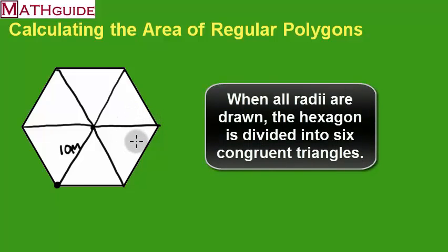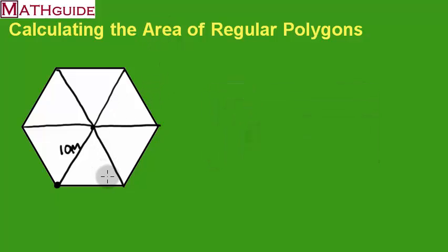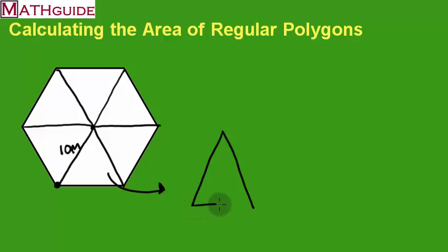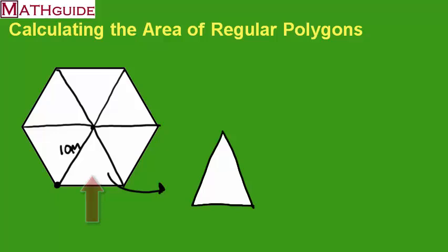To calculate the area, I'm going to take one of these triangles and enlarge it. I'm going to draw it here because we're going to be talking about it heavily. This is just a rough drawing to represent that triangle. What we are going to do is calculate the area of that triangle, and to do that we need to find some dimensions.